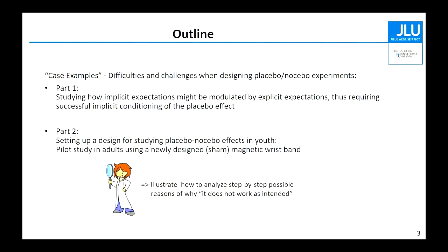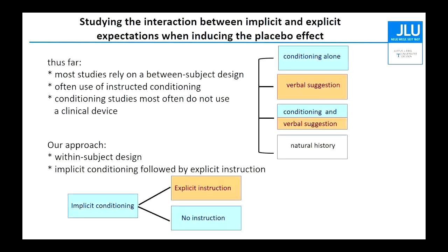What I would like to do is to share with you two case examples. What I mean with case examples are series of studies where we, in the first part, try to study how implicit expectations might be modulated by explicit expectations. And in part two, this is a series of pilot studies that we did in adults in our endeavor to design a setup where we can experimentally test placebo and nocebo effects in youth.